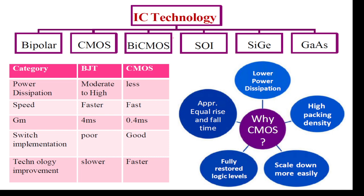These are the different IC technologies we can see here: bipolar technology, meaning BJT — bipolar junction transistor technology; CMOS technology — complementary metal oxide semiconductor; and BiCMOS, a combination of bipolar technology and CMOS technology. These are the main technologies nowadays, and by CMOS technology we are going to design any circuit.